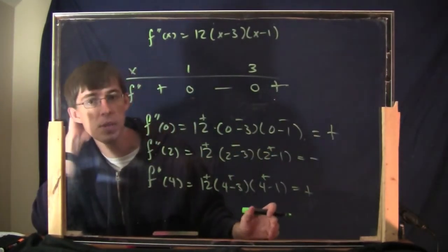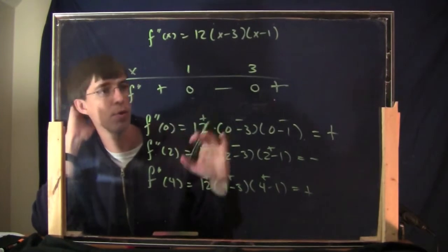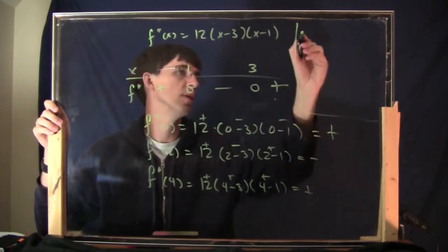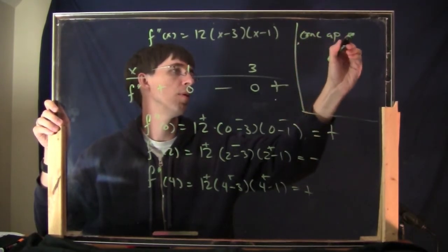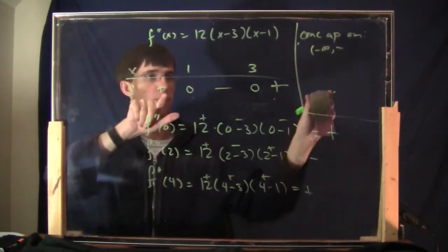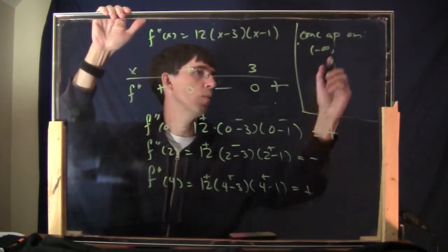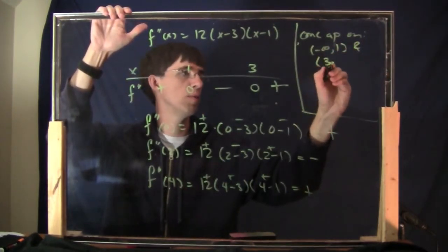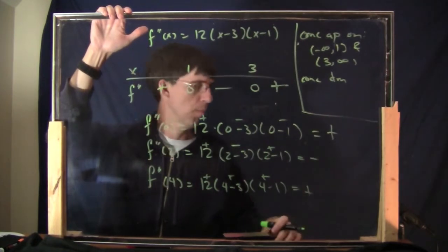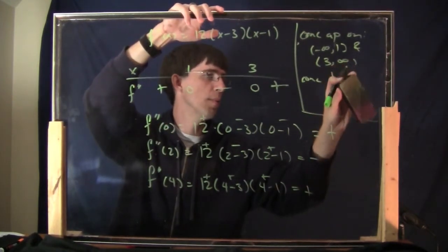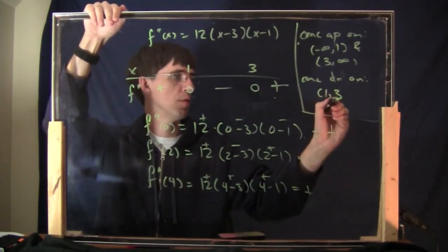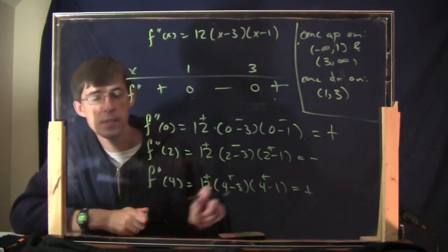My final answer: the function is concave up where the second derivative is positive, and concave down where it's negative. Concave up on the interval (negative infinity, 1) and (3, infinity). Concave down on the interval (1, 3). That's it.